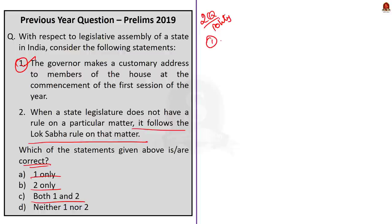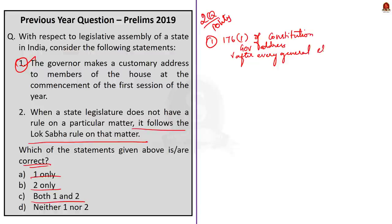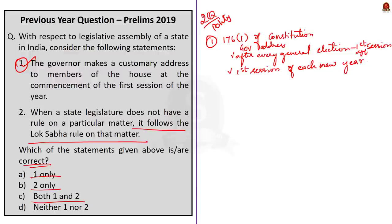The first statement is actually correct because Article 176.1 of the constitution enjoins that the governor shall address both the houses assembled together at the commencement of the first session after every general election to the assembly and at the commencement of the first session of each year, and he has to inform the legislature of the course of its summons. The governor can address the house in two circumstances: during the first session of each year, and when the house has assembled at the commencement of the first session after each general election. So the first statement is correct.